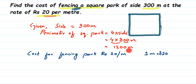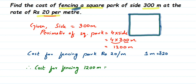Therefore, cost for fencing 1200 meters = rupees 20 × 1200. So 2 × 12 = 24, we have one zero from 20 and two zeros from 1200, making three zeros total. So the cost is rupees 24,000. I hope this question is clear — in case you have any other questions or doubts you can drop a comment. Thank you so much for watching.